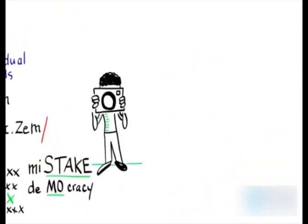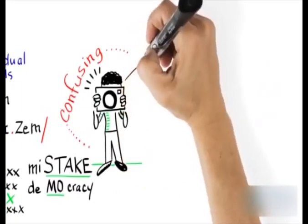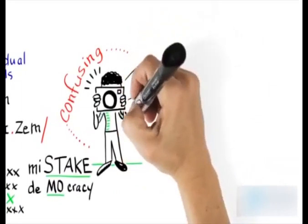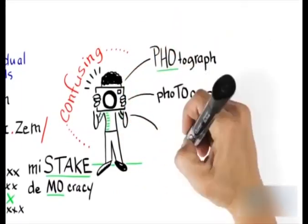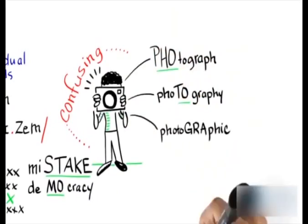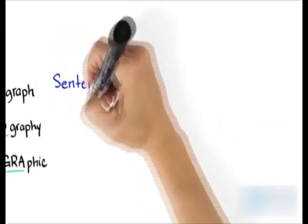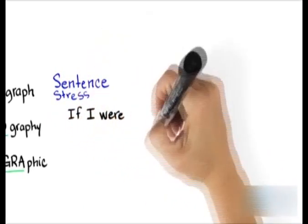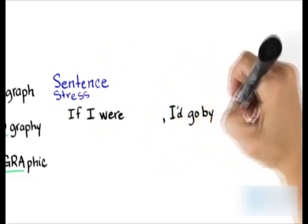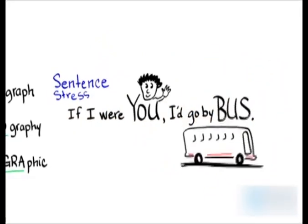Word stress can change with different parts of a word family — for instance: photograph, photography, photographic. For sentence stress, some words in a sentence are emphasized or slightly louder. For example: 'If I were you, I'd go by bus.'